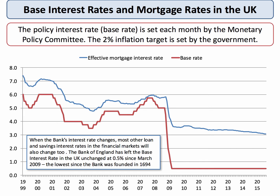So in the UK, the base rate of interest is set each month by the Monetary Policy Committee, or the MPC. Their job is to set interest rates in order to meet the government's chosen inflation target of two percent. When the bank's interest rate changes, most other loans and savings rates in financial markets will also change. At the time of producing this video, the Bank of England had left the base rate of interest unchanged at 0.5 percent since March 2009.